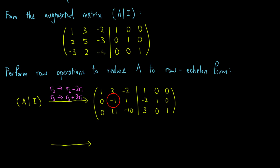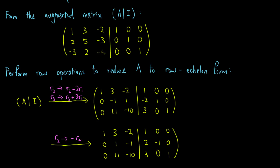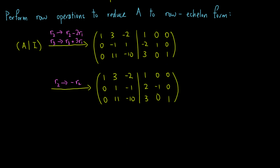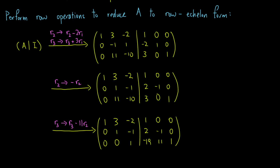Next, the leading entry in the second row is -1, so we multiply the second row by -1 to create a leading one. After that, we make the entry below the leading one to 0 by replacing the third row with the third row minus 11 times the second row. We obtain the following augmented matrix.